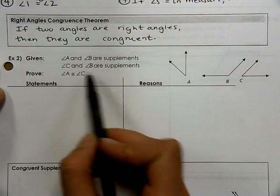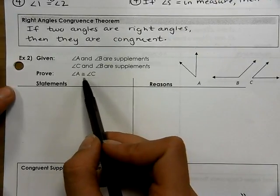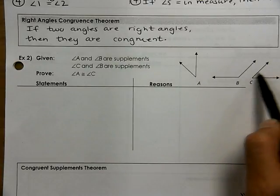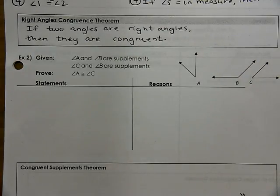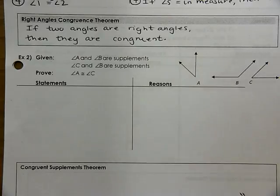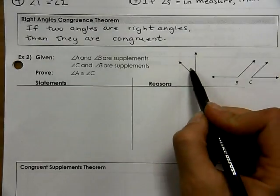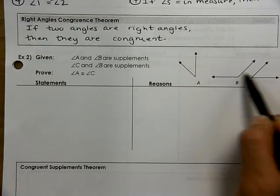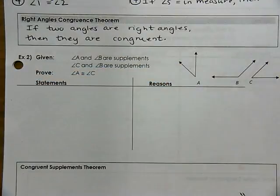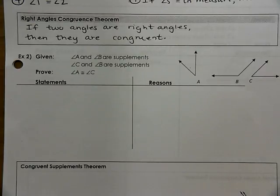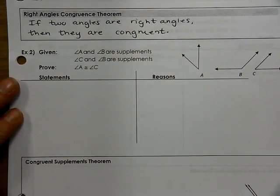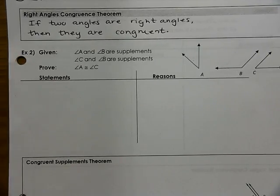Next one. You're given that angle A and angle B are supplements, and angle C and angle B are supplements. You want to prove that angle A and angle C must be congruent. If these two are supplementary and these two are supplementary, then this one must be congruent to the other because they're both supplementary to the same angle. But we have to prove that for all supplementary angles, not just specific measures. So pause the video and try this proof on your own.